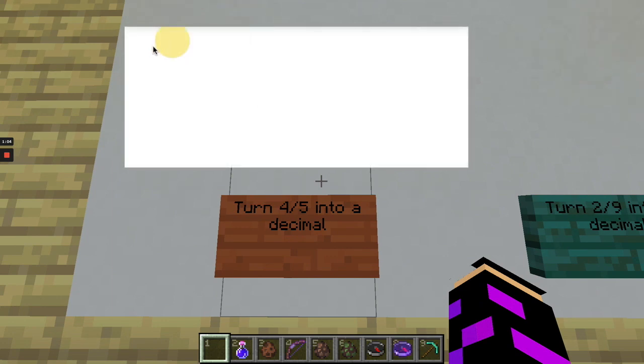So you guys know that to convert four-fifths into a decimal, all we have to do is divide, right? So four over five means four divided by five. And because four is smaller than five, I'm going to call it 4.0.